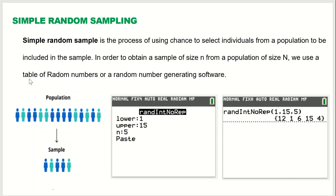You can use the table of random numbers or any random number generating software. For example, in your TI-84 calculator, if you go to Math, Probability, number 8, you'll get a random integer with no repeat. The lower value is 1, upper value is 15 — that's our population — and we want a sample of size n. After typing this and hitting Enter, we get 5 random numbers from 1 through 15.